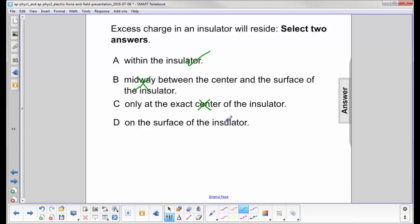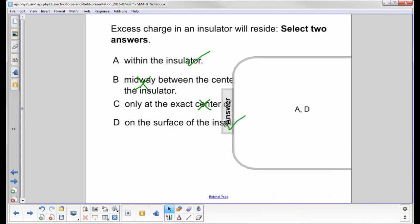And on the surface of the insulator, absolutely. When we did the ruler that was rubbed with fur, it polarized the bits of paper that it was trying to pick up, so that meant there was some excess charge on the surface. So the answer will be A and D.